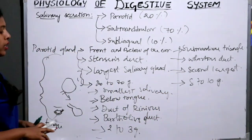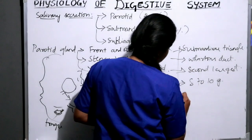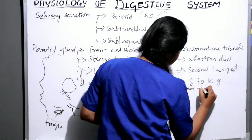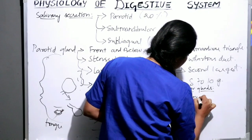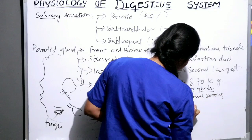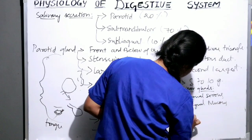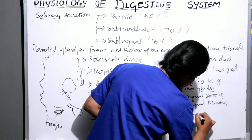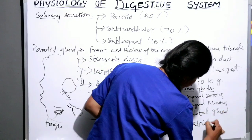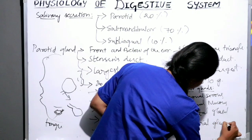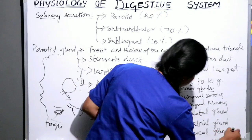Saliva is also secreted by some other minor salivary glands. These minor glands include the lingual serous gland, lingual mucous gland, palatal gland, labial gland, and buccal gland.